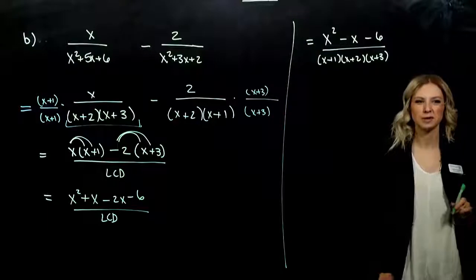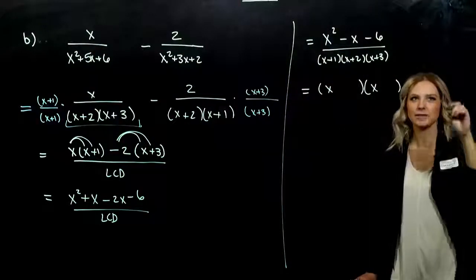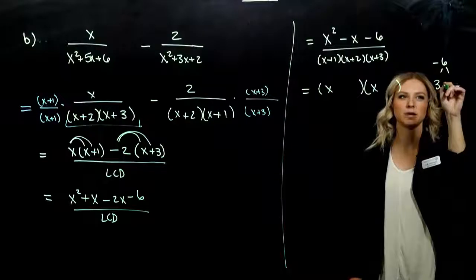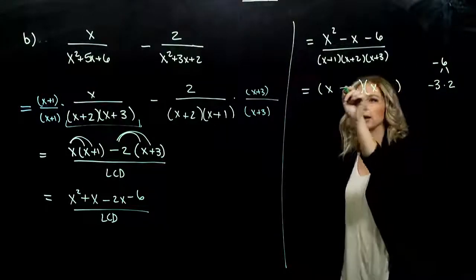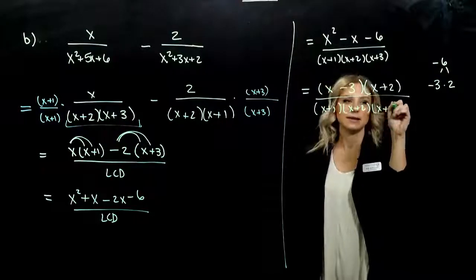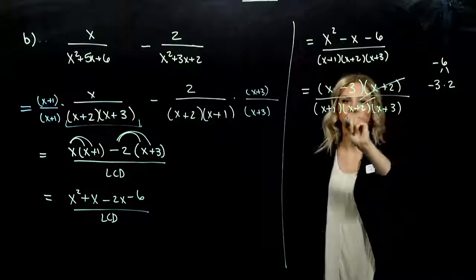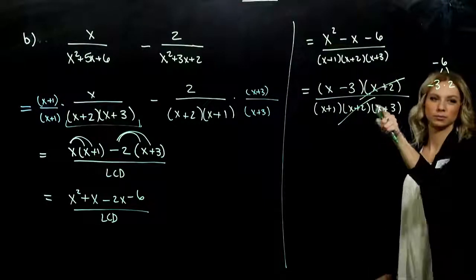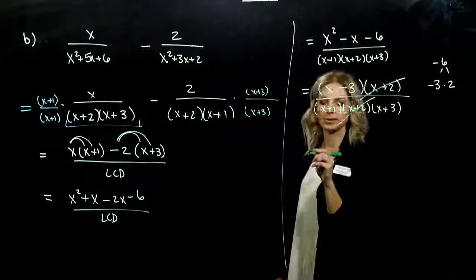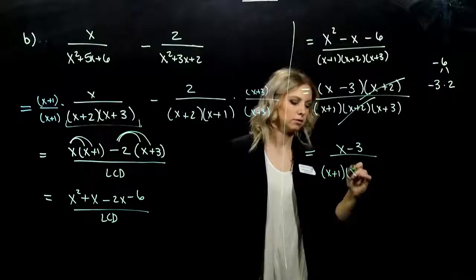Now that we've simplified the numerator, we want to see if we can factor it. I have a 1 out on the front. I need to break up negative 6 into things that multiply there and add to negative 1 — the terms need to be close together and the larger one needs to be negative. So I've got minus 3 plus 2, all over our LCD. Since everything is factored, what can we cancel top and bottom? x plus 2. Can we cancel x minus 3 and x plus 3? No — one's positive, one's negative; they have to match exactly. So up top we're left with x minus 3, and down below we've got x plus 1 times x plus 3.